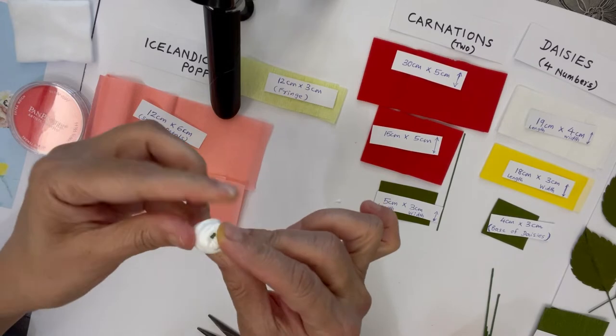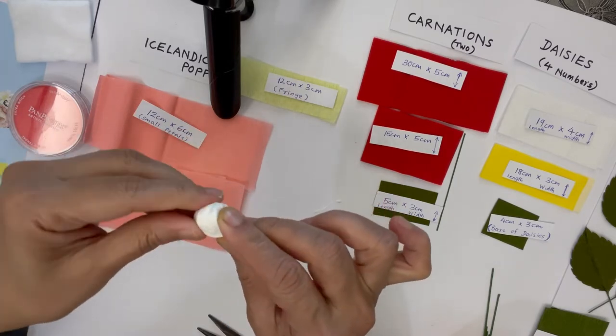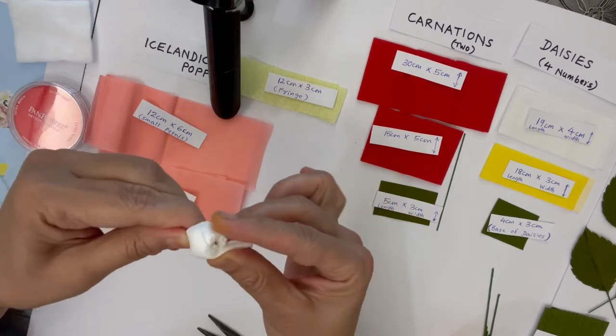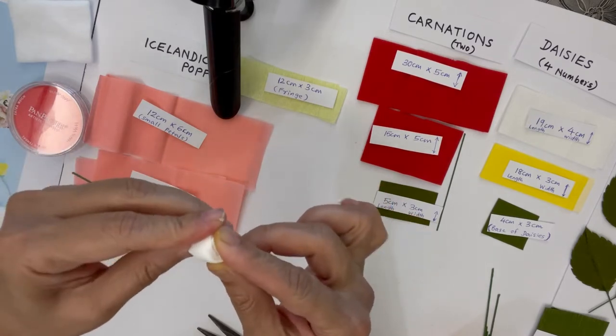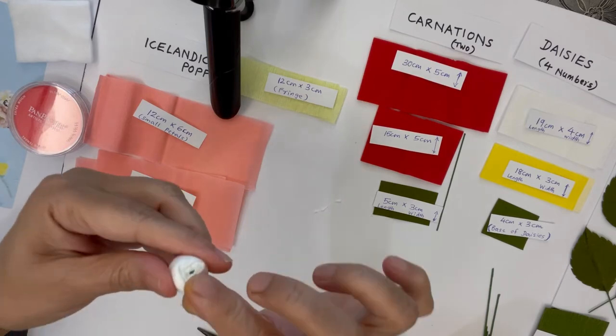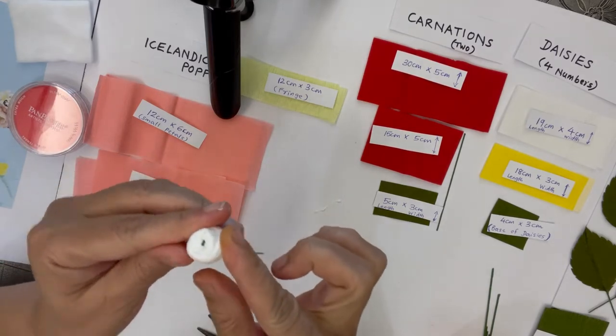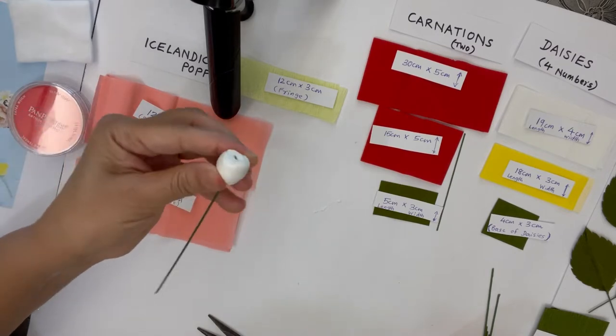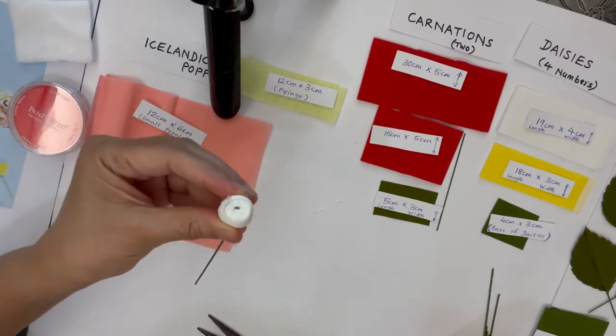You can take the length of tissue as much as the required size of the center. You can make it smaller or bigger, whatever you like. Just turn it around and make a round shape.